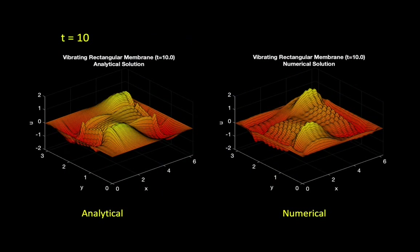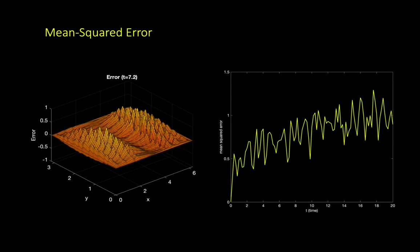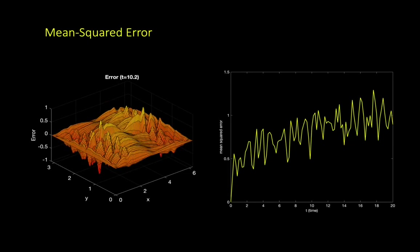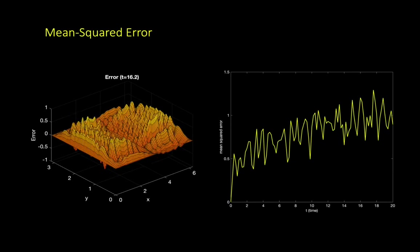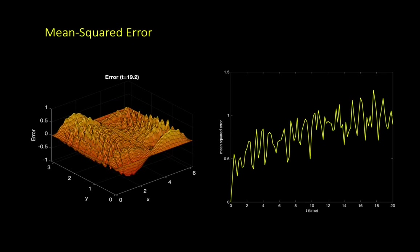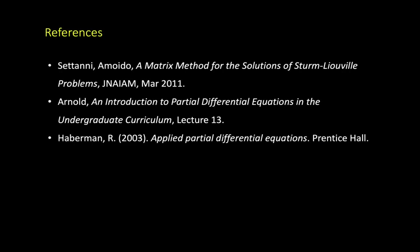Here is a snapshot at time equals 10. Although it was hard to see much difference in the moving figures, we can now see that there are some differences between the two solutions. Then the question is, how big is this error and how the error changes as time changes? The figure on the left shows the difference between the analytic and the numerical solutions. The figure on the right plots the mean squared error of the solutions along time t. We can notice that the error does not constantly increase but rather oscillates as it gradually increases.